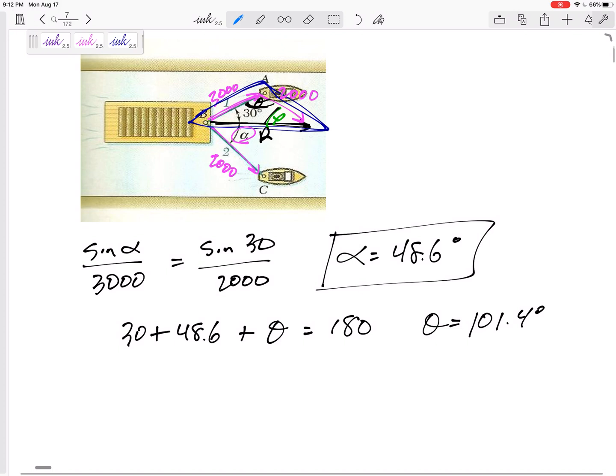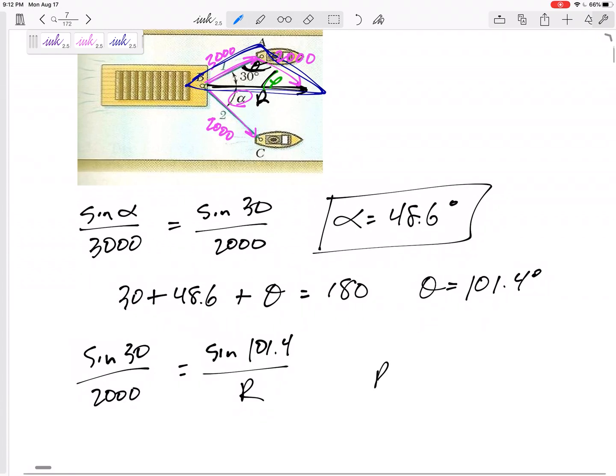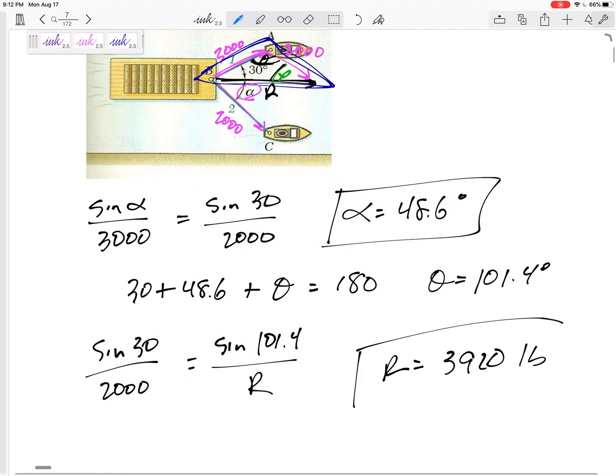So now I can use law of sines again. And sine 30 over 2,000 equals sine 101.4 over R. And I'd get R, 3920 pounds.